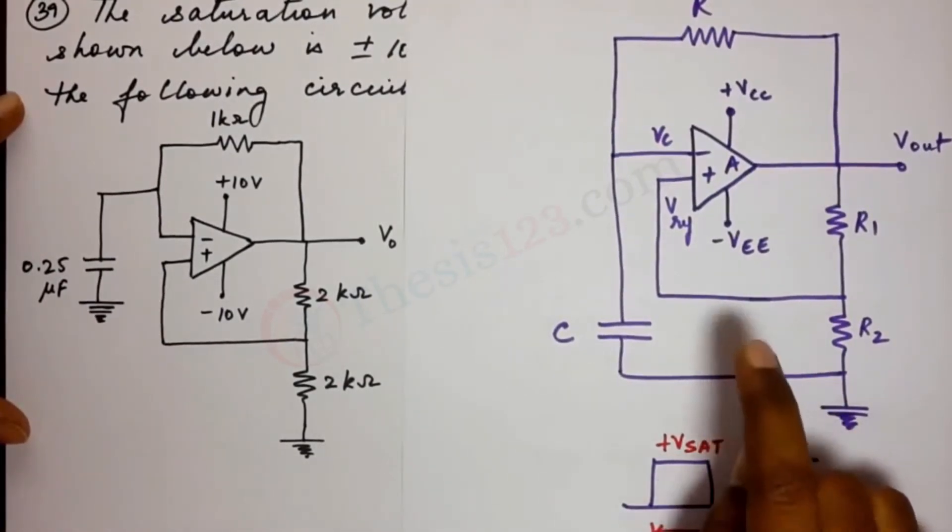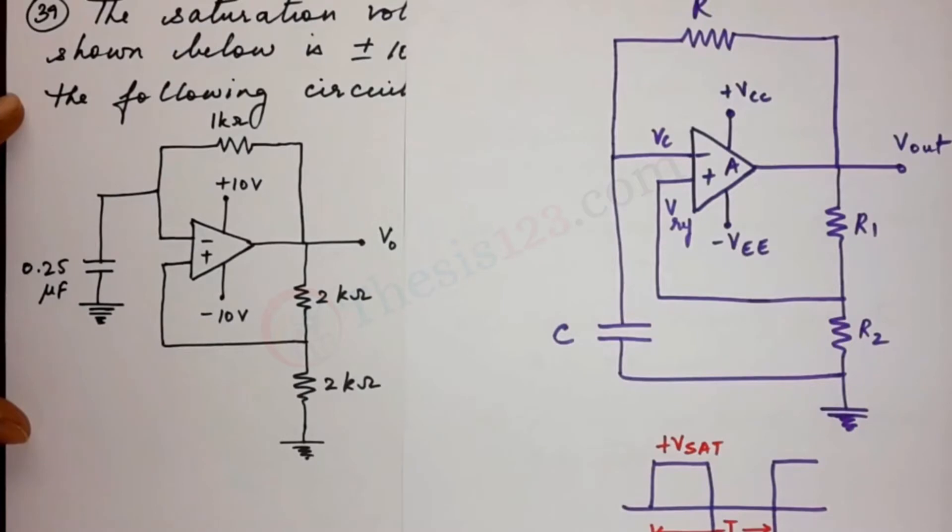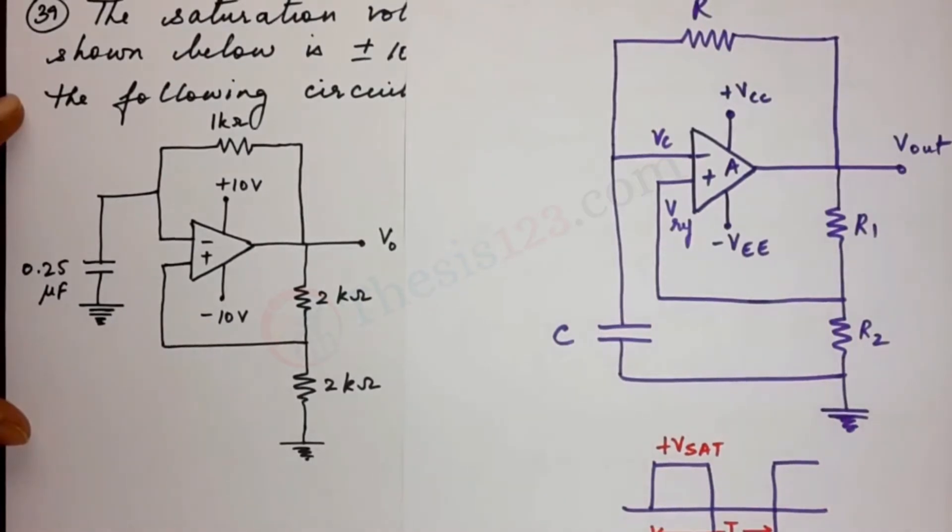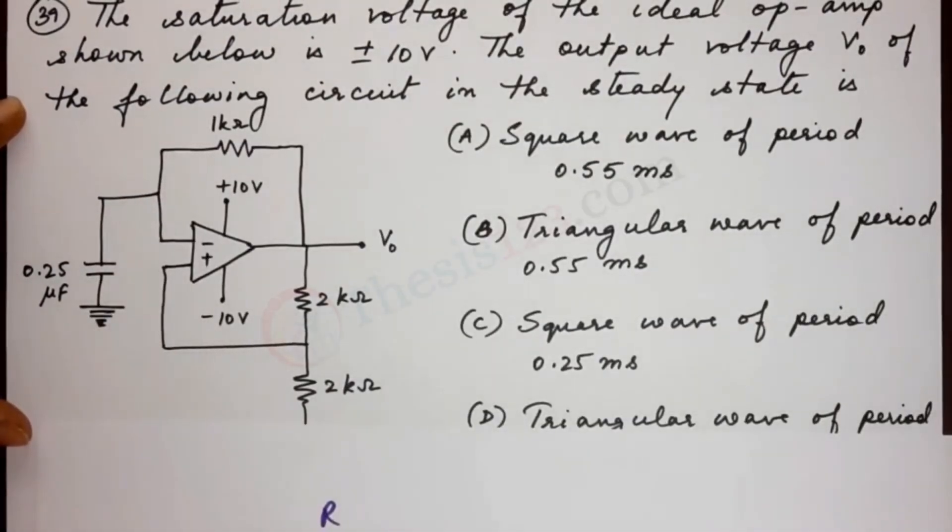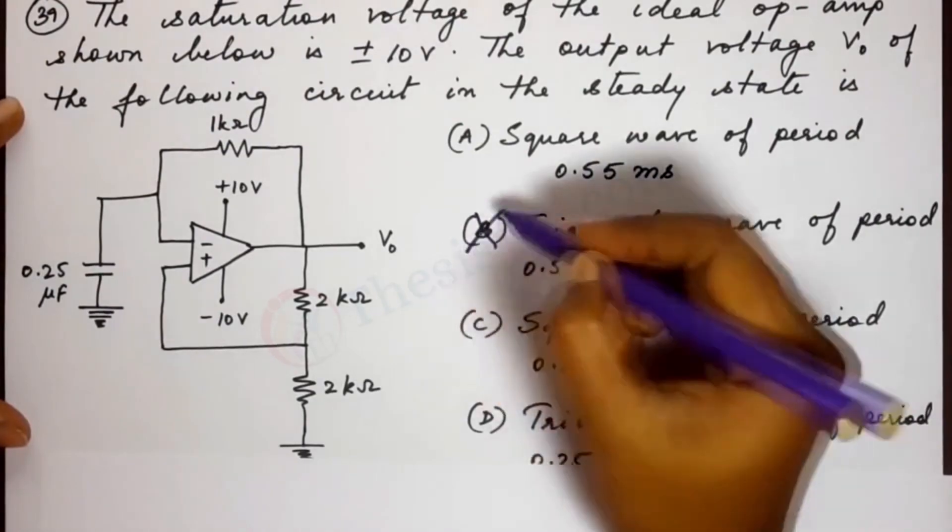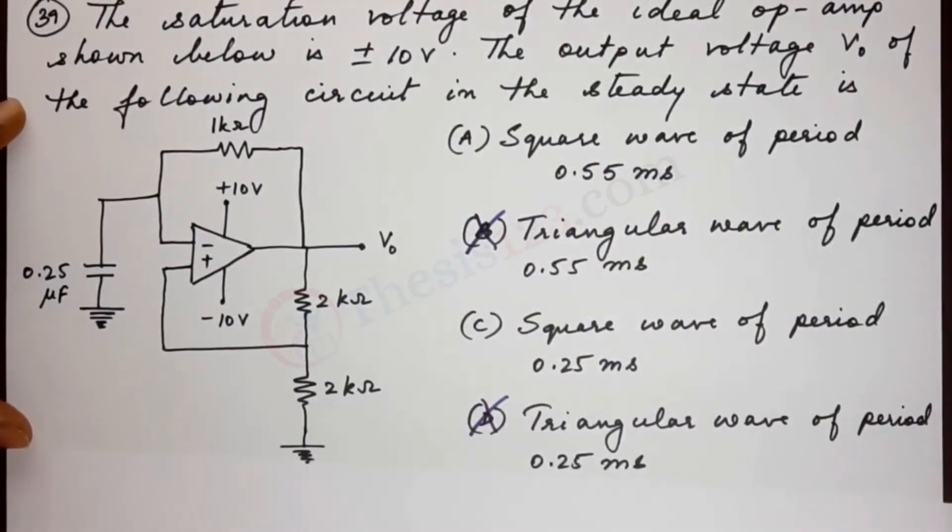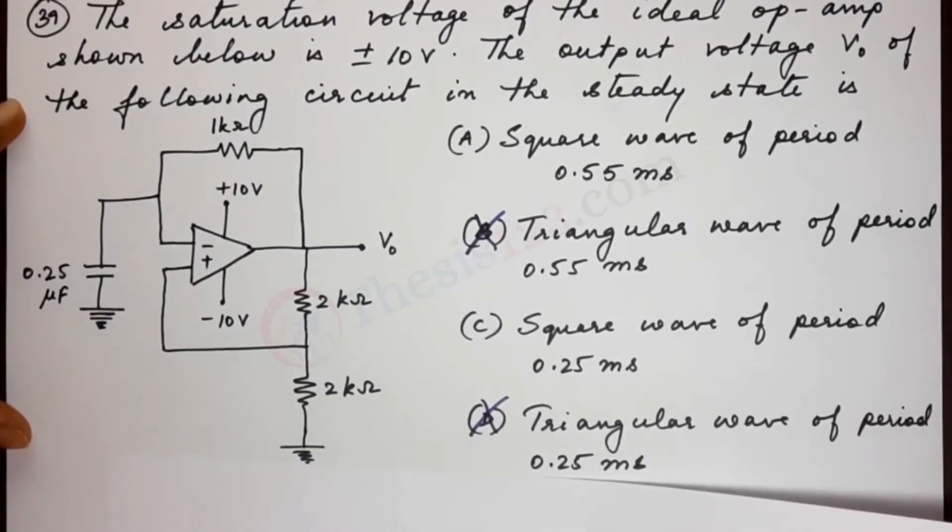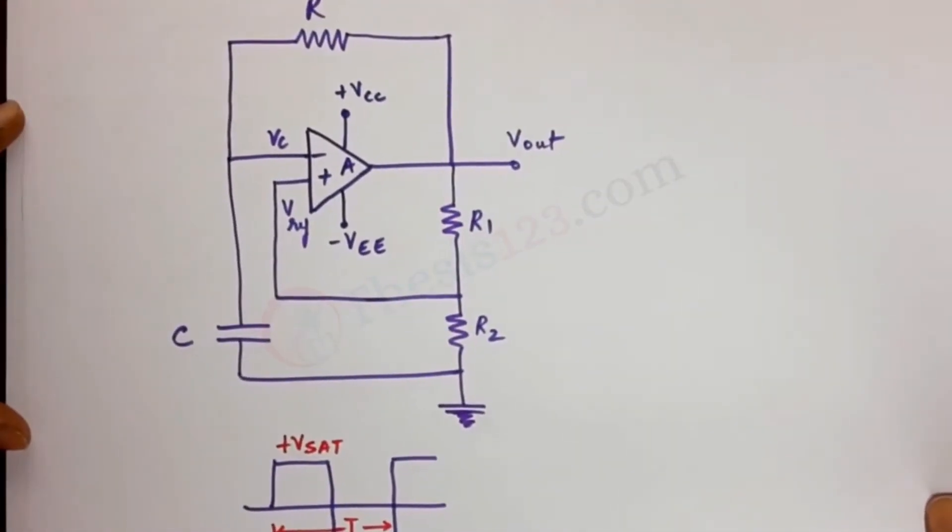And one of the characteristics of an A-stable multivibrator is that it always produces a square waveform. So that rules out two of the options given to us. We can rule out option B and option D. So now we know that the multivibrator produces a square wave. Next we have to find out what the period is.